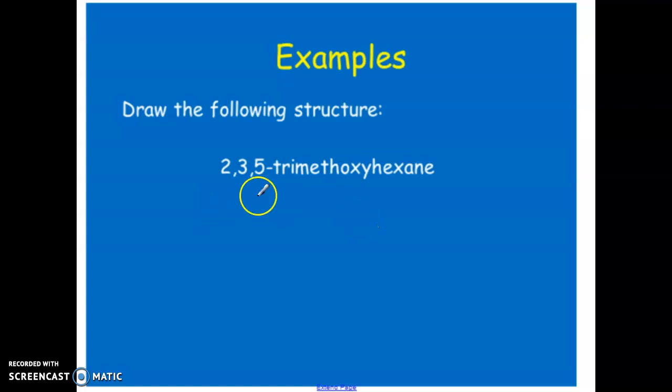Give this a try. Draw this out. We have 2,3,5-trimethoxyhexane. Let me do this. 2,3,5-trimethoxy. We have one, two, three, four, five, six. On carbon 2, we have a methoxy. On carbon 3, we have another methoxy. And carbon 5, we have another methoxy. Same deal as before. If you have multiples of the exact same branch, you add in the prefix. So dimethoxy, trimethoxy, tetramethoxy, whatever the branch, it follows the same thing as other branching rules or systems.